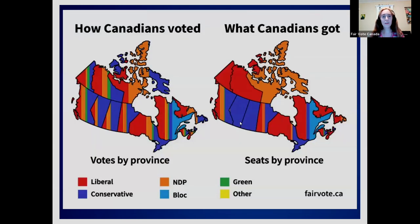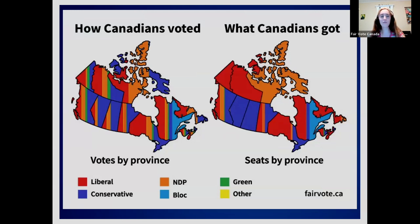Overall, a map showing votes by province and seats by province reveals that across the country there is tremendous diversity in values — we're really not that different from each other. And yet our voting system polarizes us into giant partisan blocks in parliament.